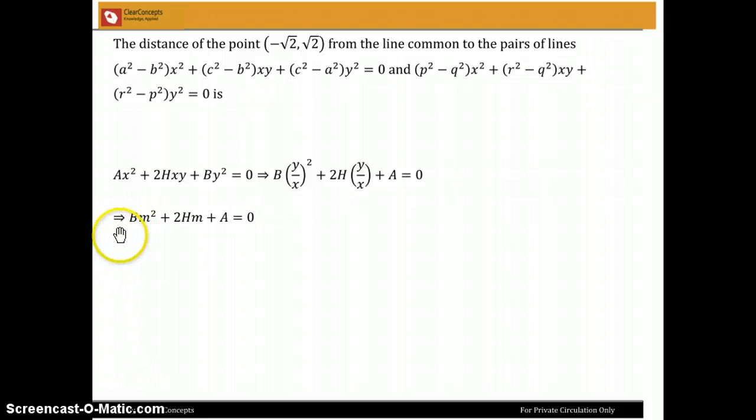So this is a quadratic equation in M and if you do the same process with both these equations, you will get two quadratic equations in M. Now since both these pairs of lines represent lines that are passing through the origin.